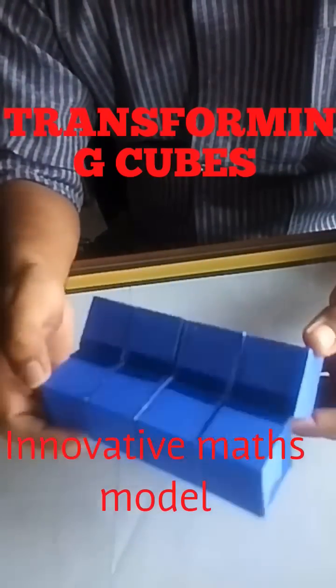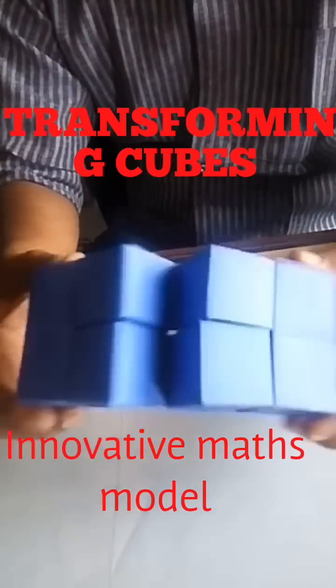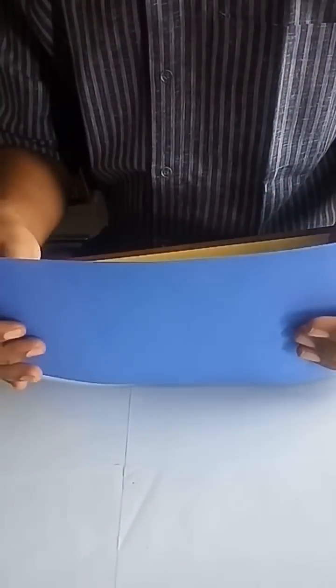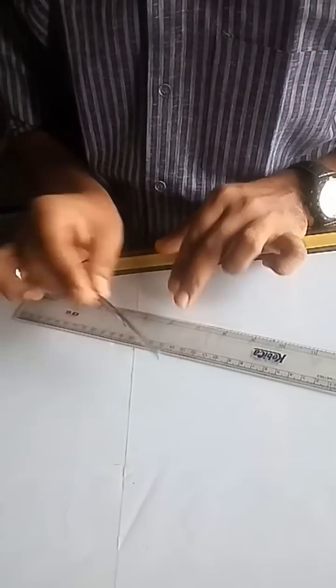We are going to make this dynamic model of transforming cubes. To make this model you require two rectangular stiff paper sheets of breadth equal to half of its length, a tape, a ruler and a scissor.